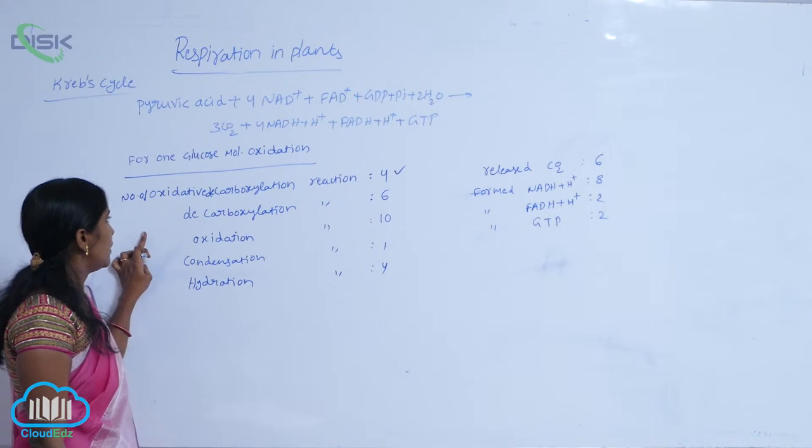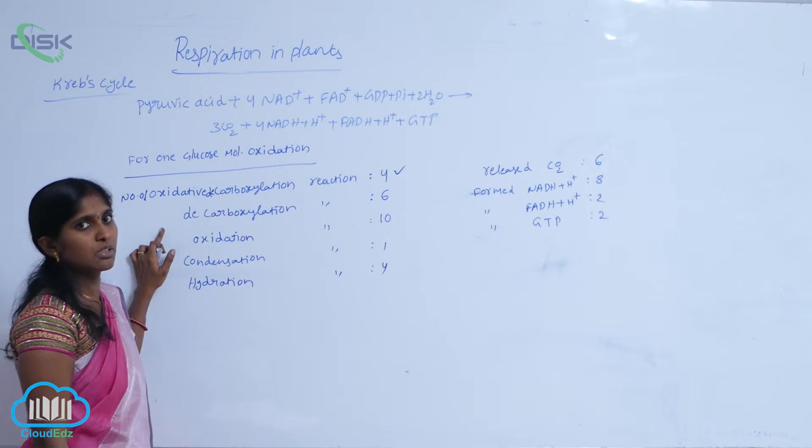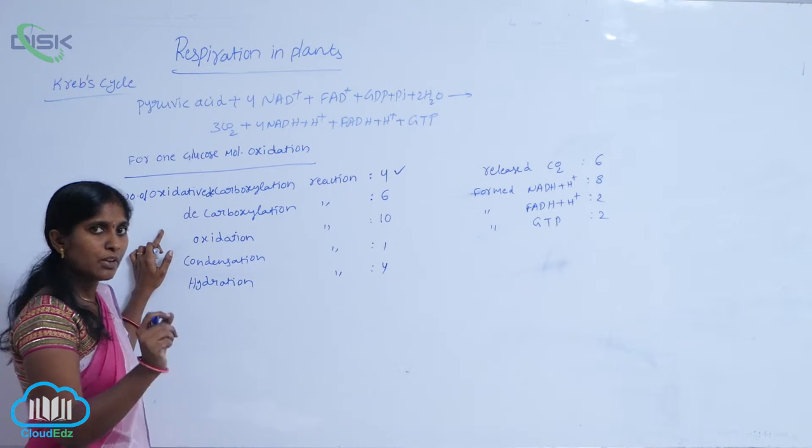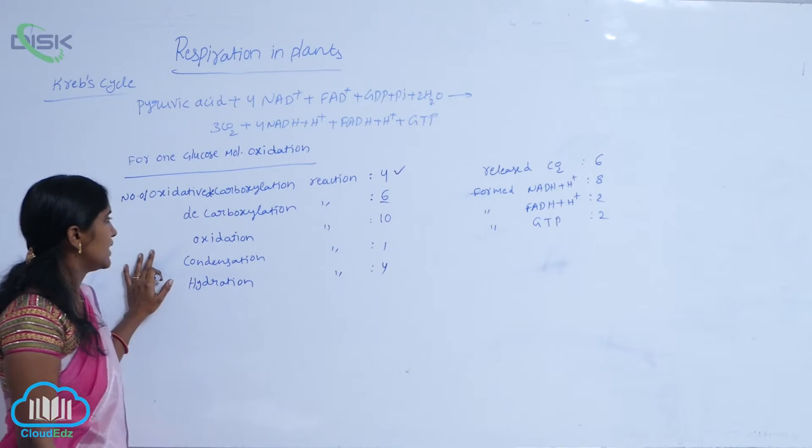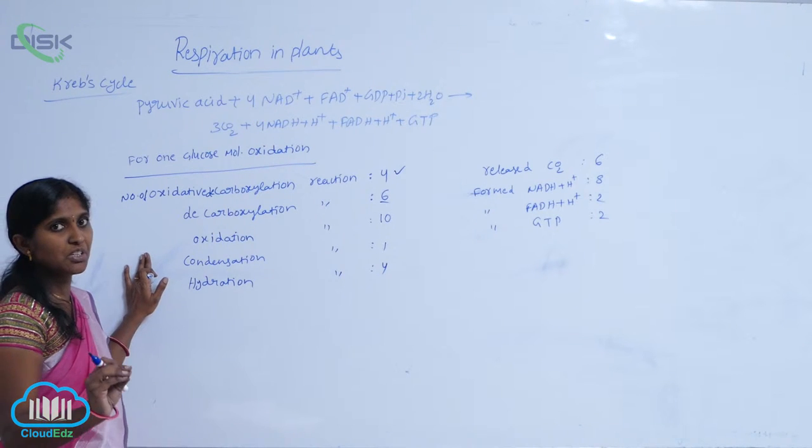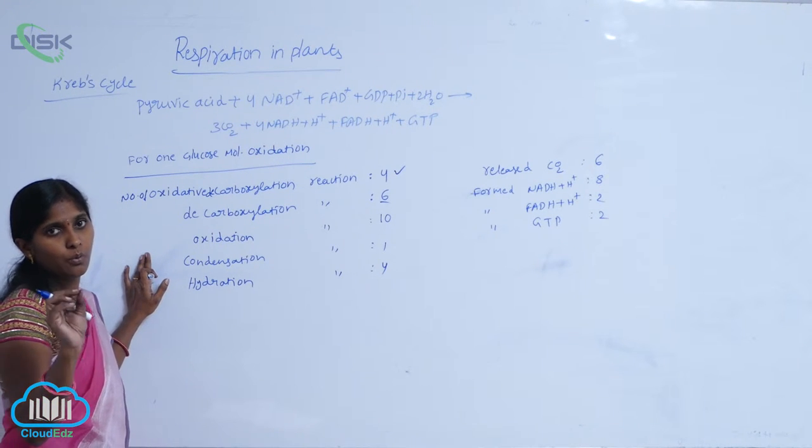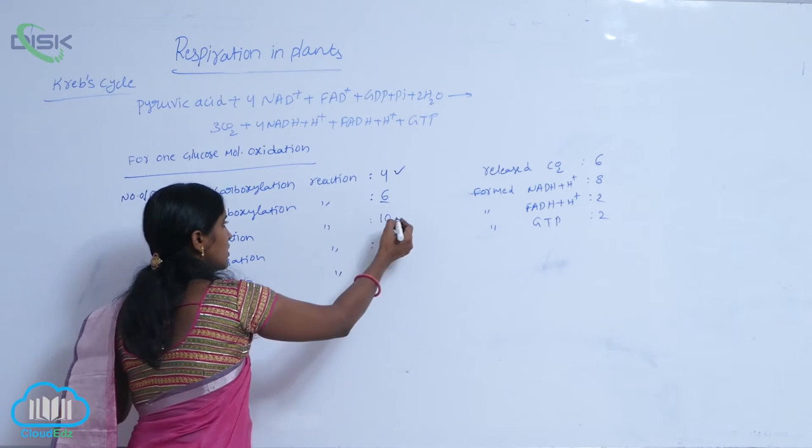The number of decarboxylation reactions for one glucose molecule oxidation are six. Next, the number of oxidation reactions carried out for one glucose molecule oxidation are ten.